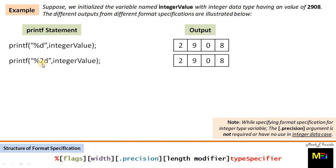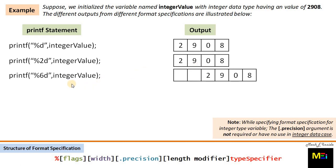In the next printf statement, a width argument of 2 is passed. Recall that width specifies the minimum number of positions to be acquired in the console output. The result shows that since the number 2908 has a width greater than 2, it is printed in full, overriding the minimum width specification. When we pass a width of 6, the output acquires a minimum of 6 fields, but the data needs only 4 fields, so the left two are automatically filled with blank spaces and the output is right-justified.